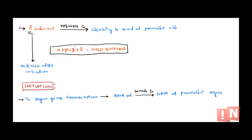The sigma subunit is important for recognizing and binding at the promoter site. When all subunits — alpha, beta, beta prime, and sigma — are together, this is called the holoenzyme, which can recognize and bind at the promoter site. Without sigma, the RNA polymerase core enzyme cannot bind to the promoter. So at the promoter site, the holoenzyme — RNA polymerase along with sigma factor — binds and starts transcription. Once transcription starts, the sigma factor is weakly bound and gets released after initiation.